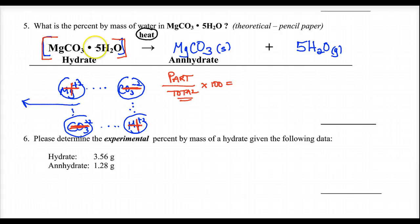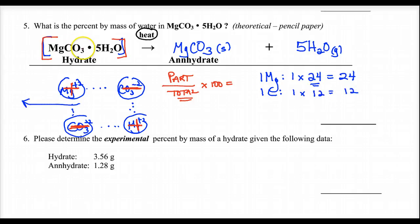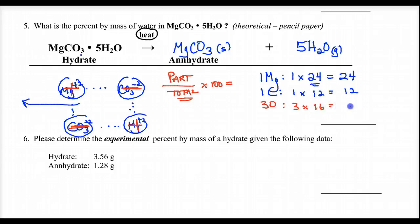How many magnesiums? One magnesium — one times 24 is 24 from the periodic table. One carbon — one times 12 is 12. Three oxygens in the carbonate — three times 16 is 48. When doing hydrate problems, keep the water together separately rather than combining all oxygens.